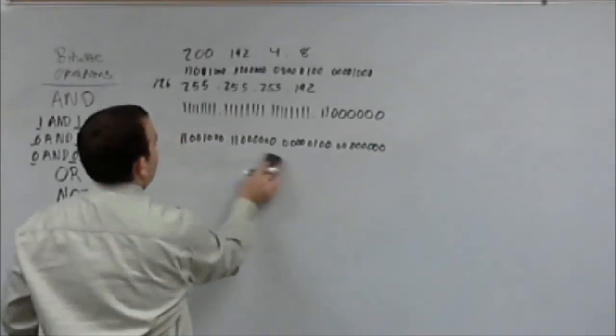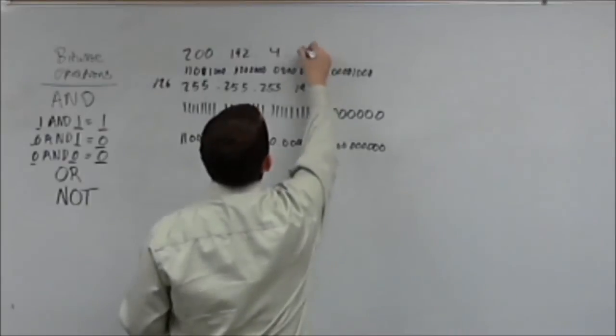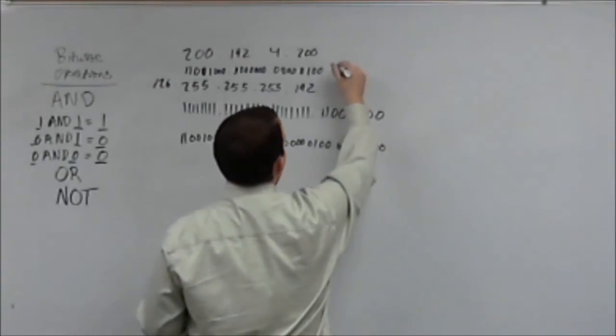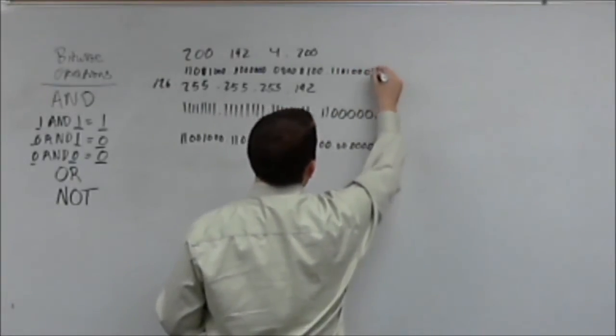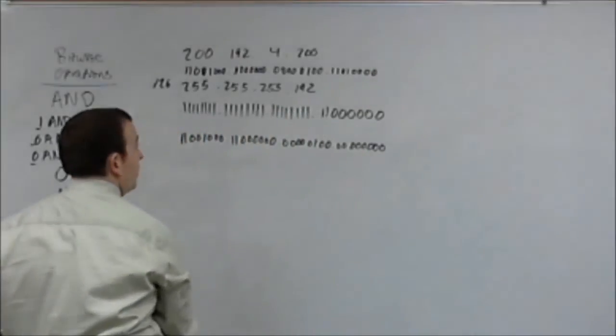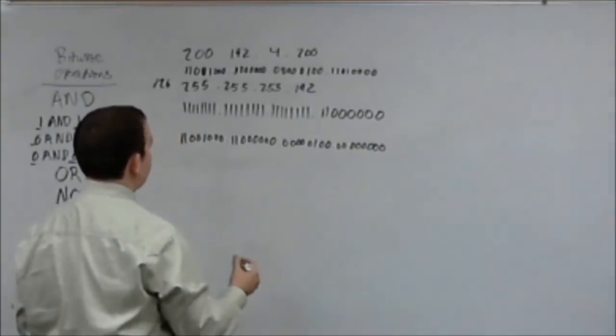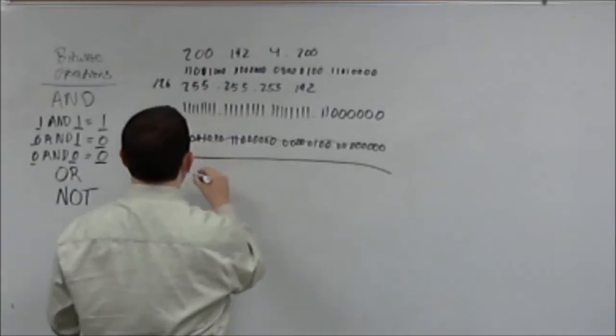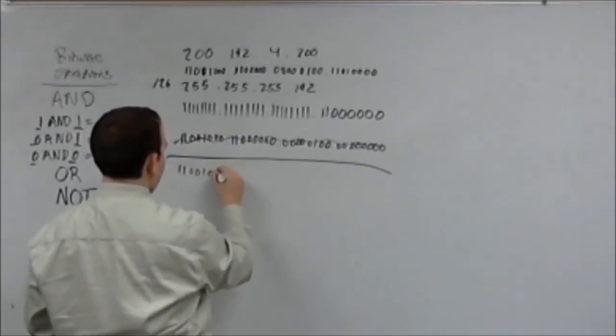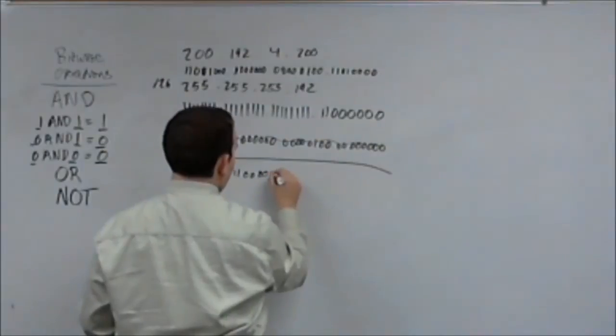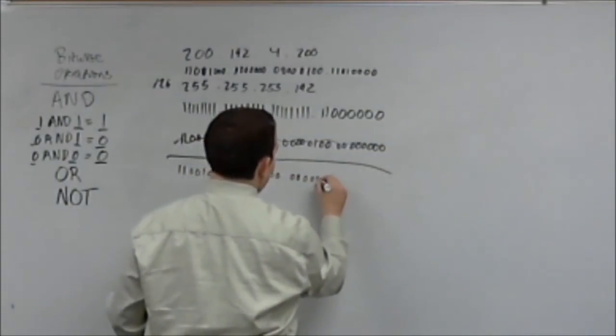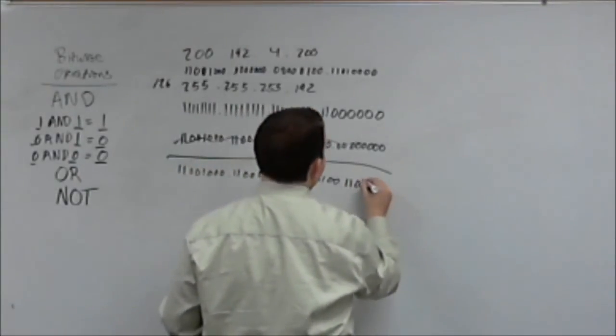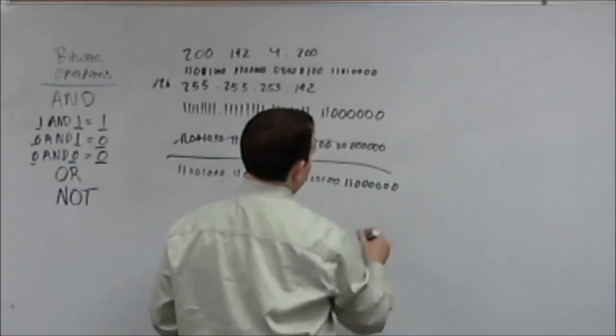So, that is going to change this last octet to 11001000. So, we're going to take and simplify this out again. So, of course, we've got the same beginnings. Which is going to be 11001000, 11000000, 00000100. Except right here is where it's going to change up. Next, we're going to have 11000000, and then the rest are zeros. Because of the subnet mask.